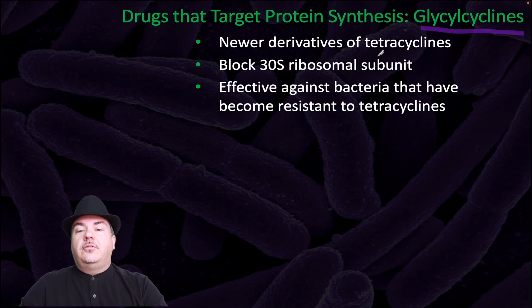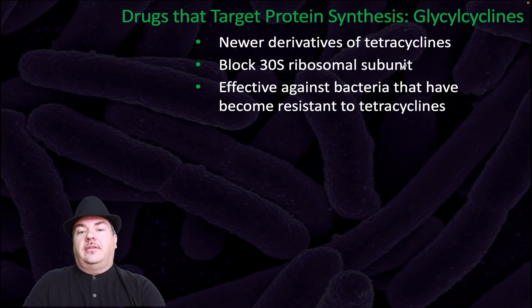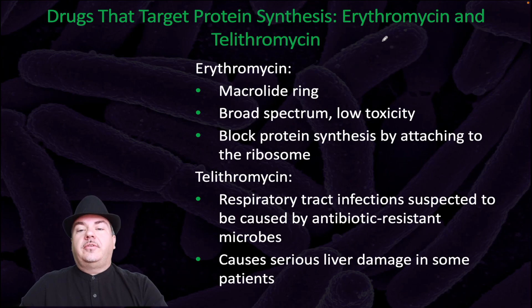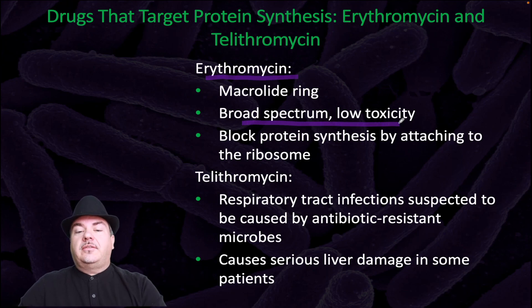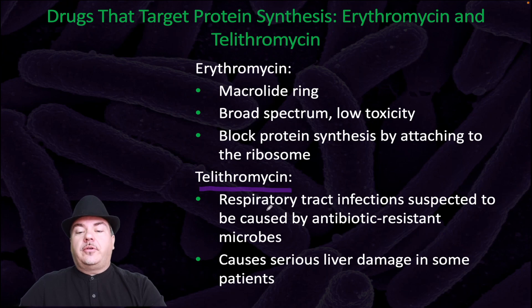Glycylcyclines are a newer derivative of tetracyclines. They block the 30S ribosomal subunit and are effective against bacteria that have become resistant to tetracyclines. More drugs targeting protein synthesis include erythromycin and telithromycin. Erythromycin is broad spectrum and low toxicity, blocking protein synthesis by attaching to the ribosome. Telithromycin is used in respiratory tract infections suspected to be caused by antibiotic-resistant microbes; however, it can cause serious liver damage in some patients.